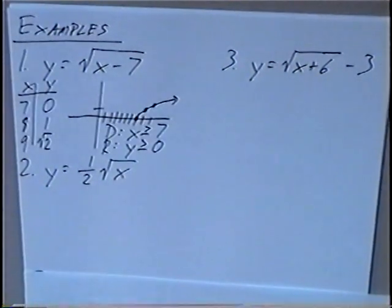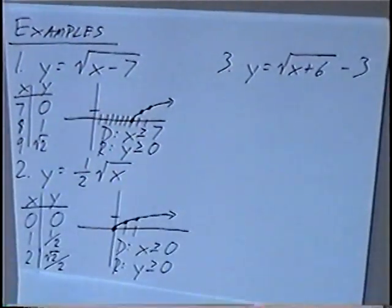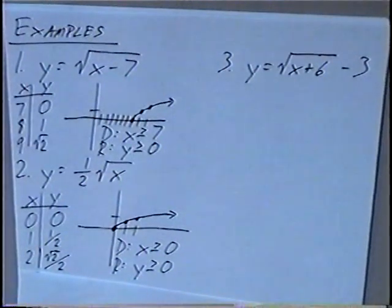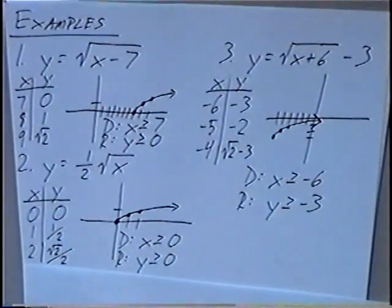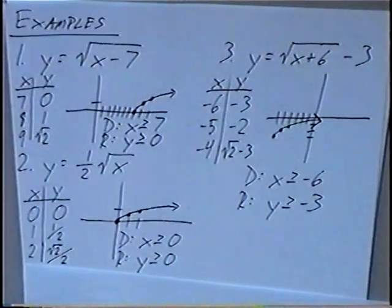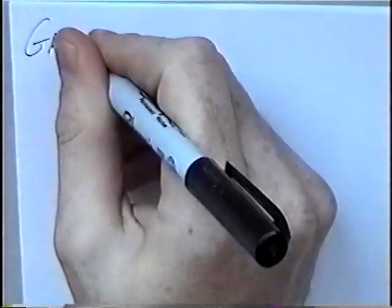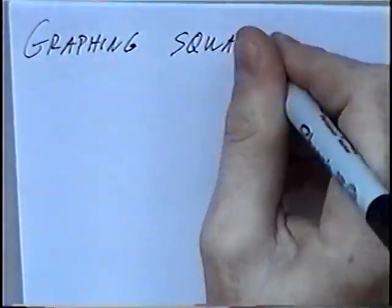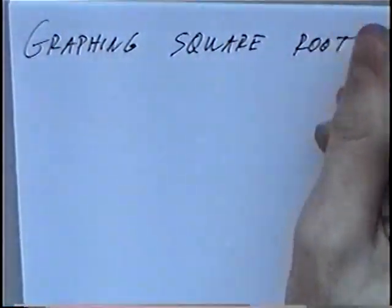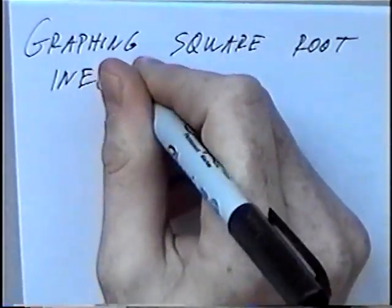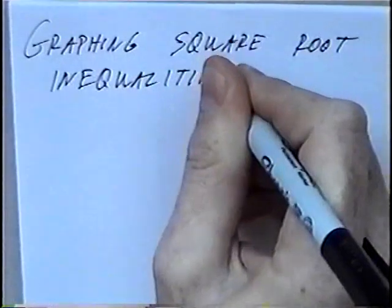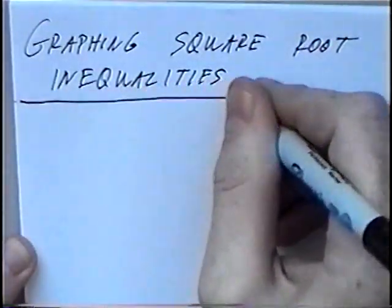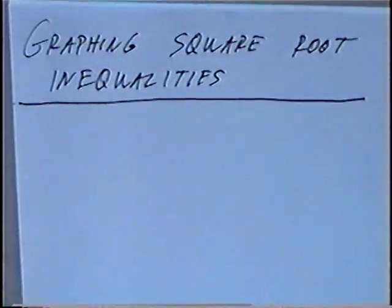The title of the last section today is graphing square root inequalities. In this section we'll continue to graph square root functions, but instead these will be square root inequalities.